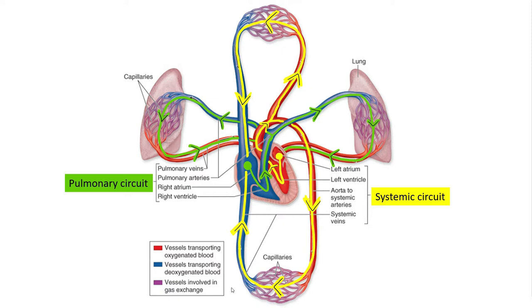Each circuit begins in one of the heart's atria. The right atrium marks the beginning of the pulmonary circuit, which is marked in green in this figure — you can see it go through the right side of the heart, leave the heart, head to both lungs, and then ultimately return. The systemic circuit then begins when blood returns from the lungs, enters the left atrium, travels through the left side of the heart, and heads off to the rest of the body, eventually returning to the right atrium.